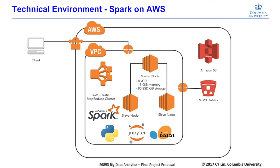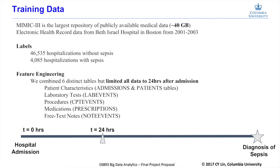For our training data, we had 40 gigabytes of raw data. We had about 5,000 cases that were either negative or positive for sepsis — note the class imbalance: 4,000 versus 46,000. We combined six distinct tables: patient characteristics, laboratory tests, procedures, medication, and free text notes. Importantly, we limited all data to the first 24 hours after hospital admission, so physicians can know the patient's risk of sepsis relatively quickly upon admission.